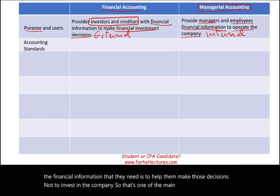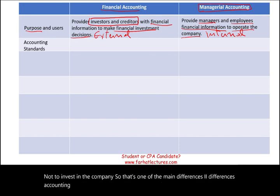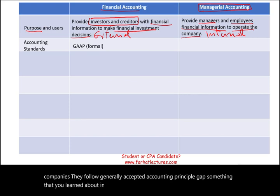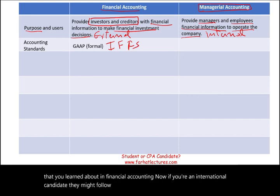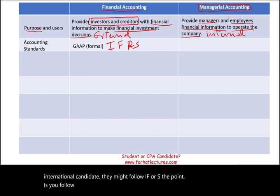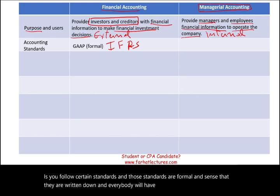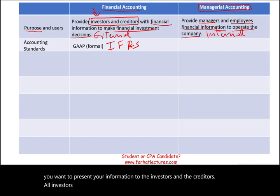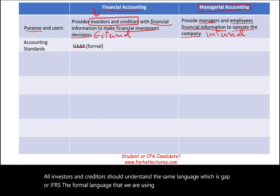The second difference is accounting standards. Financial accounting, for large companies, follows Generally Accepted Accounting Principles — GAAP — something you learned about in financial accounting. International candidates may follow IFRS. The point is, you follow certain formal standards that are written down and everyone must follow. When presenting information to investors and creditors, all parties should understand the same language, which is GAAP or IFRS, the formal language used to prepare financial statements.